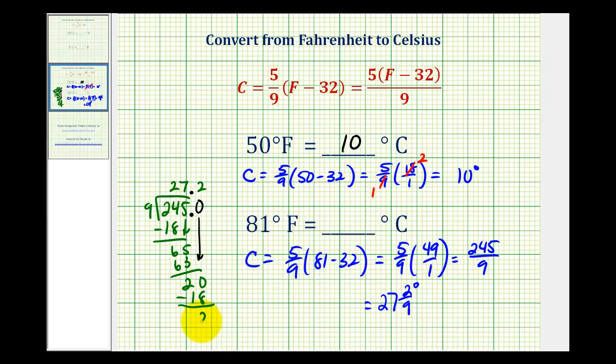Notice how we get another two, add another zero, bring it down, and there's two nines in 20 again. So what we're going to notice here is that this two repeats. So we could say this is equal to 27.2 with a bar over it to show it's repeating.